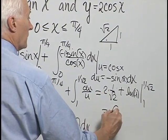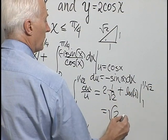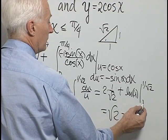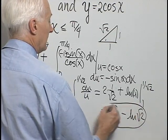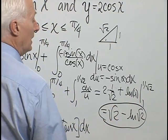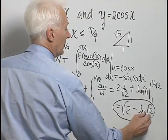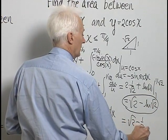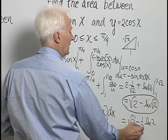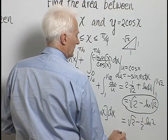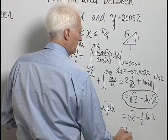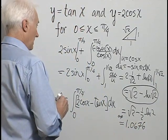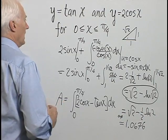2 over root 2 is root 2, and the natural log of 1 over root 2 is minus the log of root 2 itself. The natural log of 1 is 0, so our final answer is root 2 minus natural log of root 2. Using the law of logarithms, the natural logarithm of the square root is one half the natural log of the number itself, so we have root 2 minus one half natural log 2. Putting that into our calculator gives approximately 1.0676 for the area between the tangent function and the cosine function.